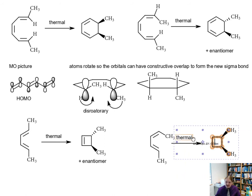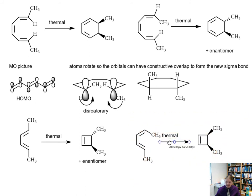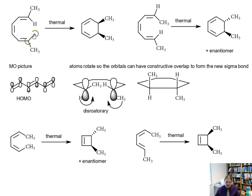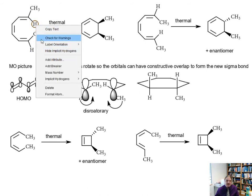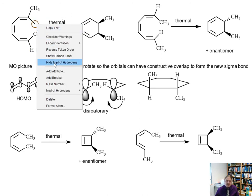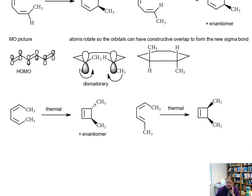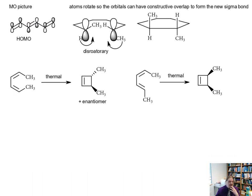It's also worth pointing out that the variation where both methyl groups are pointing inward also leads to anti for the four-carbon version, and it also leads to syn for the six-carbon version — for the same reason. The methyl groups have to rotate in opposite directions. So let's look at the four-carbon case and see how it's different.